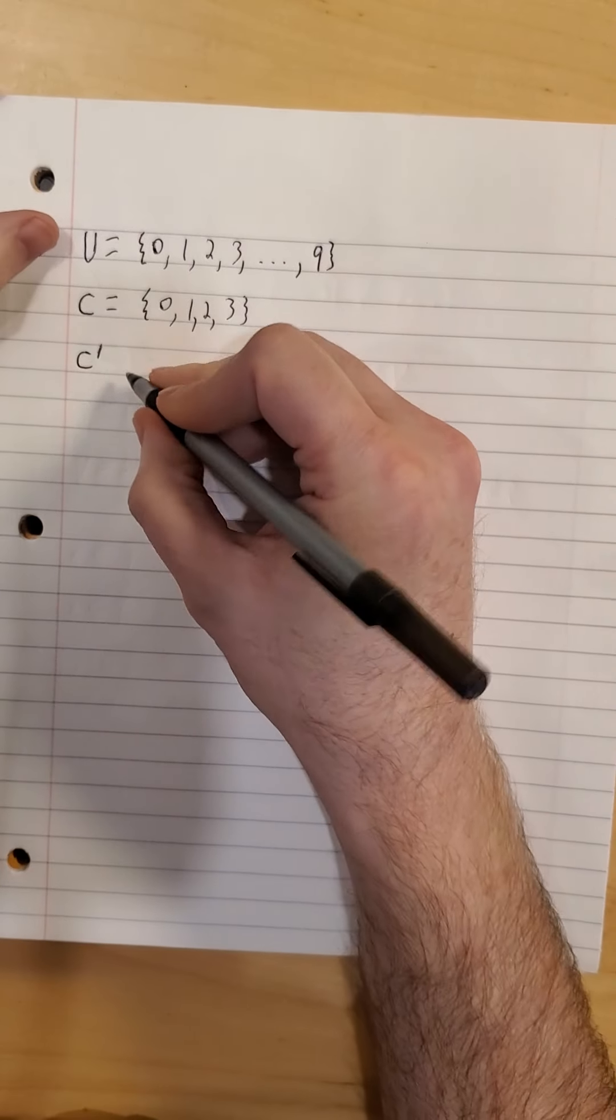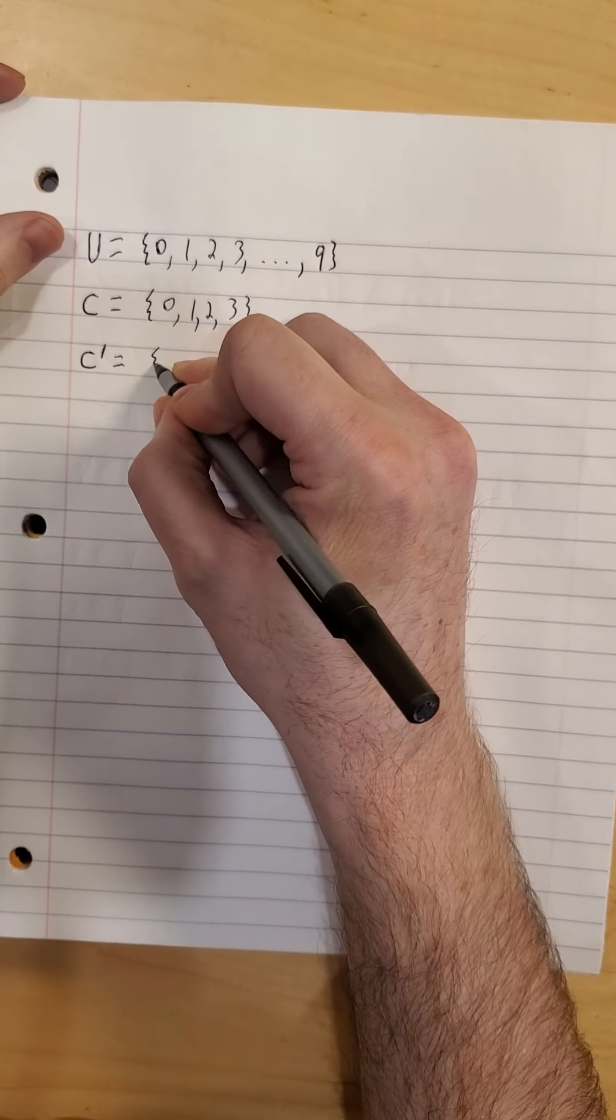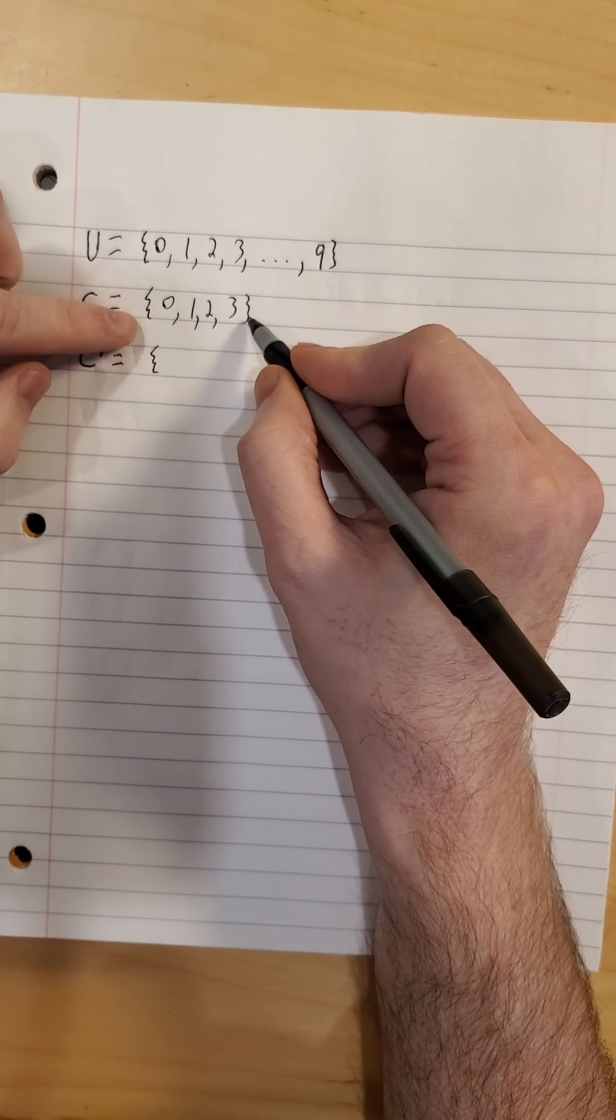Okay, welcome back. So the complement of set C, everything in our universal set other than 0, 1, 2, and 3.